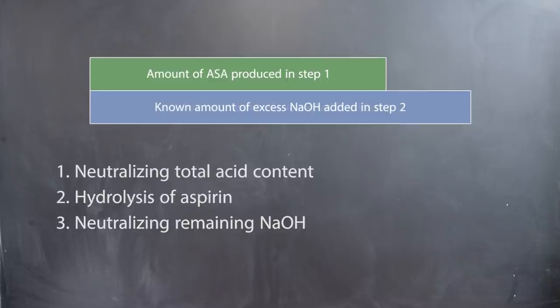Lastly, you will neutralize any remaining sodium hydroxide from step two with standardized HCl. Once you determine the amount of HCl used in step three, you can determine how much of the excess NaOH added in step two remained in the flask after reacting with aspirin, and therefore the amount of aspirin that was present.